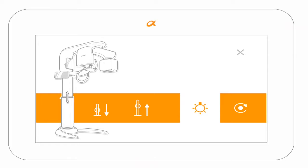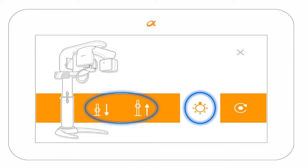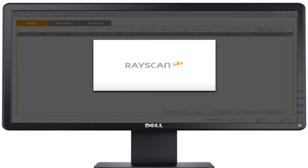The touchscreen selections include the laser alignment lights button, up and down buttons, and the reset button.